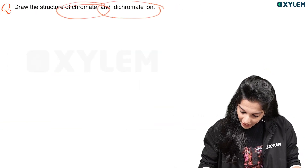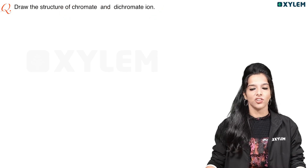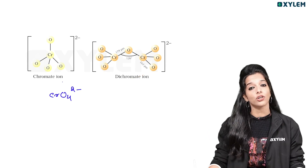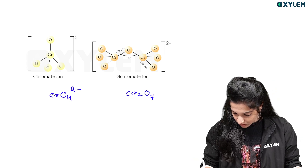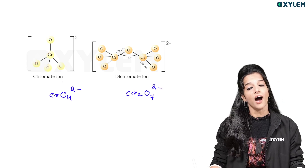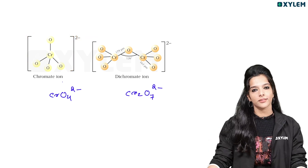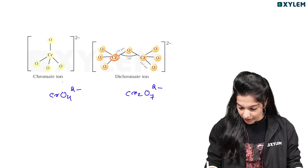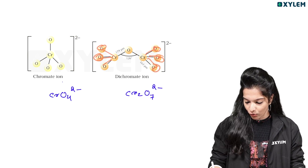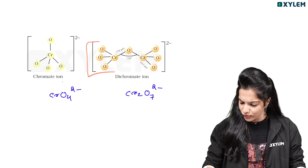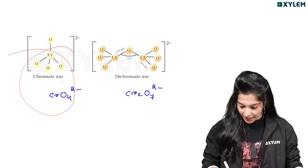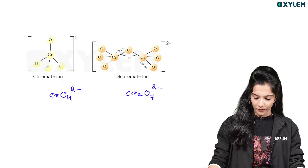Draw the structure of chromate and dichromate ions. Chromate ion is CrO4 2-. Dichromate ion is Cr2O7 2-. For chromate, chromium is bonded to 4 oxygen atoms in a tetrahedral shape, with 2- charge. For dichromate, 2 chromium atoms are connected by 1 common oxygen, with 3 oxygen atoms on each chromium — giving 7 total — forming two tetrahedral units fused together, total charge 2-. Chromate is yellow in color, dichromate is orange.